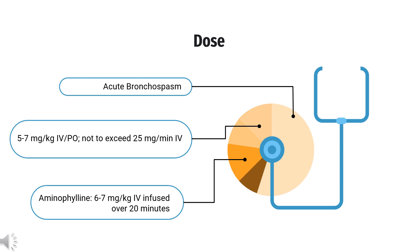Extended release Q12HR to maintain levels of 10–15 mg/L. For smokers: 0.9 mg/kg/hr for the next 12 hours after loading dose, then 0.63 mg/kg per hour, or 5 mg/kg PO extended release Q8HR.